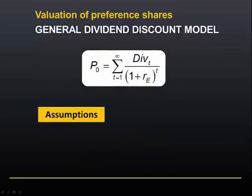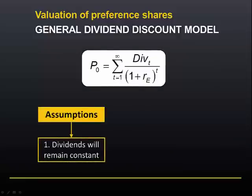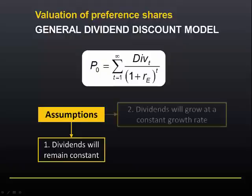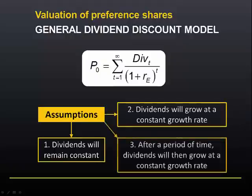There are three such assumptions that we can make. Number one, dividends will remain constant. Number two, dividends will grow at a constant growth rate. Or number three, after a period of time, dividends will then grow at a constant growth rate.